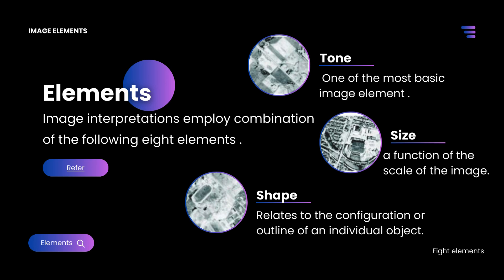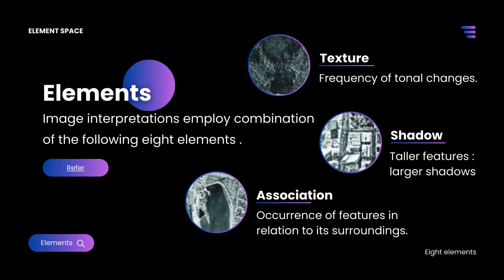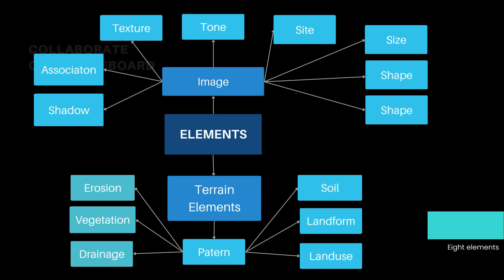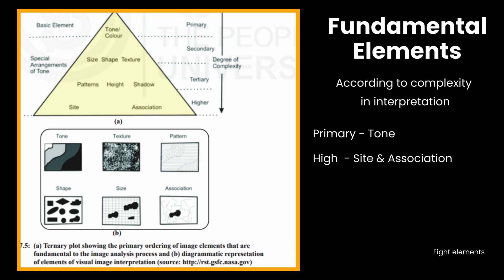Tone, size, shape, texture, shadow, association, site, and pattern. Fundamentally, these are classified as image elements, and pattern is a terrain element that includes land use, soil, vegetation, and so on. The figure shows the arrangement of different elements according to their degree of complexity.